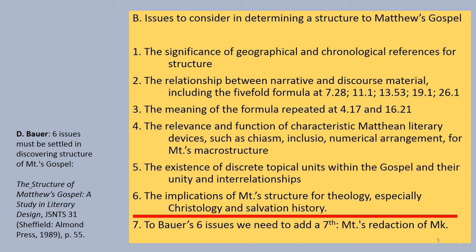Second, Bauer refers to a formula that appears five times in the Gospel: 'after Jesus finished saying these things.' The first occurrence is at 7:28, at the end of the Sermon on the Mount. Then 11:1, after the missionary discourse in chapter 10; 13:53, at the end of the chapter on parables; 19:1, after the ecclesiastical discourse in chapter 18; and then 26:1, as we move into the passion narrative after the apocalyptic discourse.